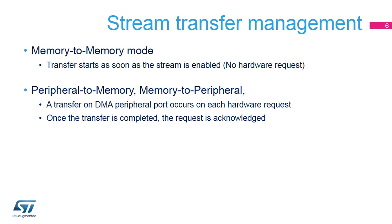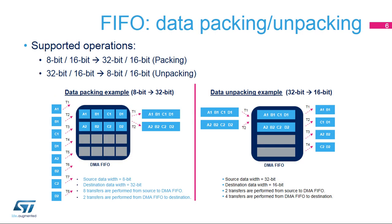When data is transferred to or from a peripheral, the hardware request coming from the selected peripheral is used to trigger the data transfer on the DMA peripheral port. Once the transfer is completed, the request is acknowledged. When FIFO mode is enabled and direct mode disabled, the DMA controller manages the data format difference between source and destination, or data packing and unpacking.